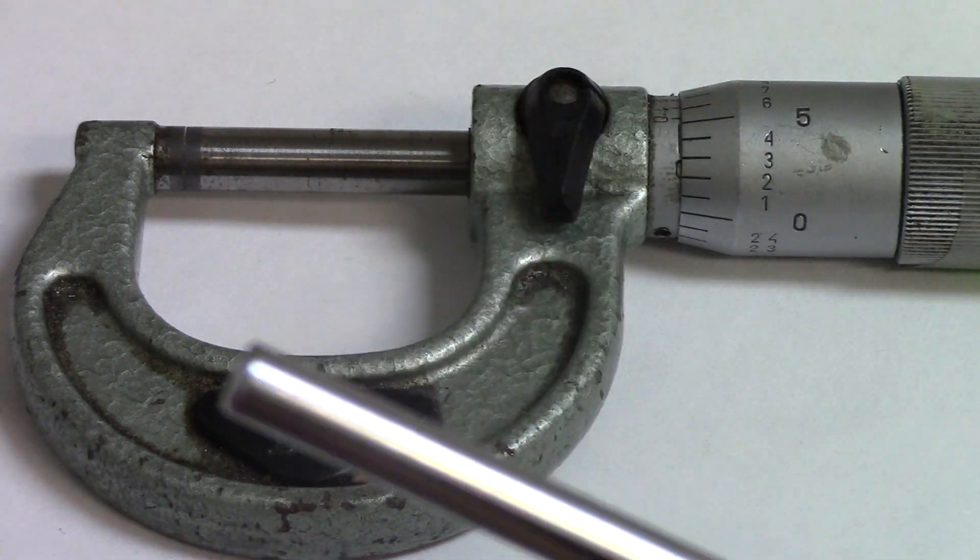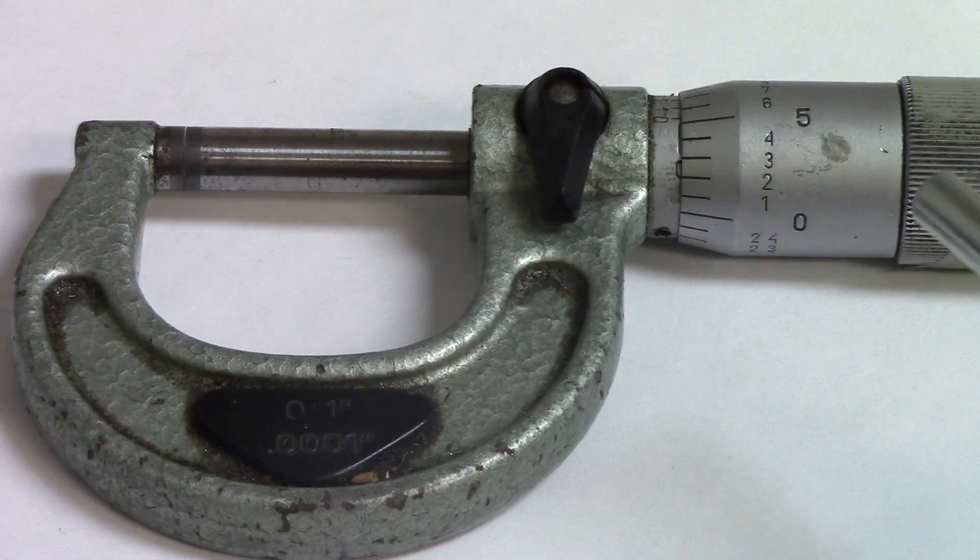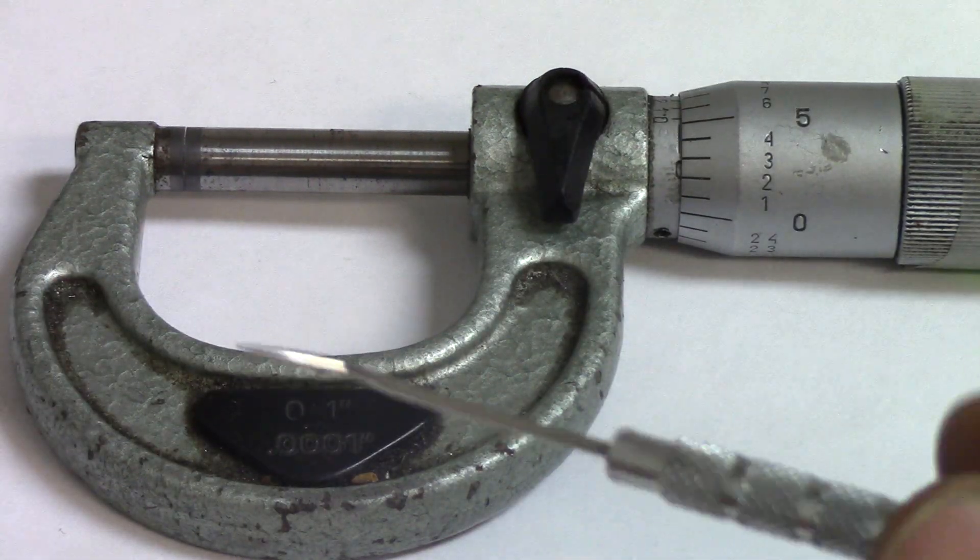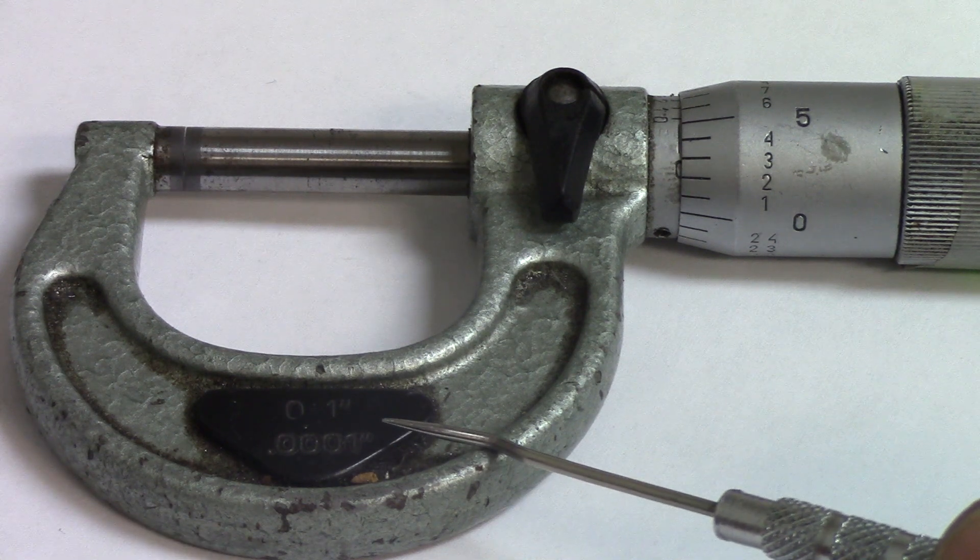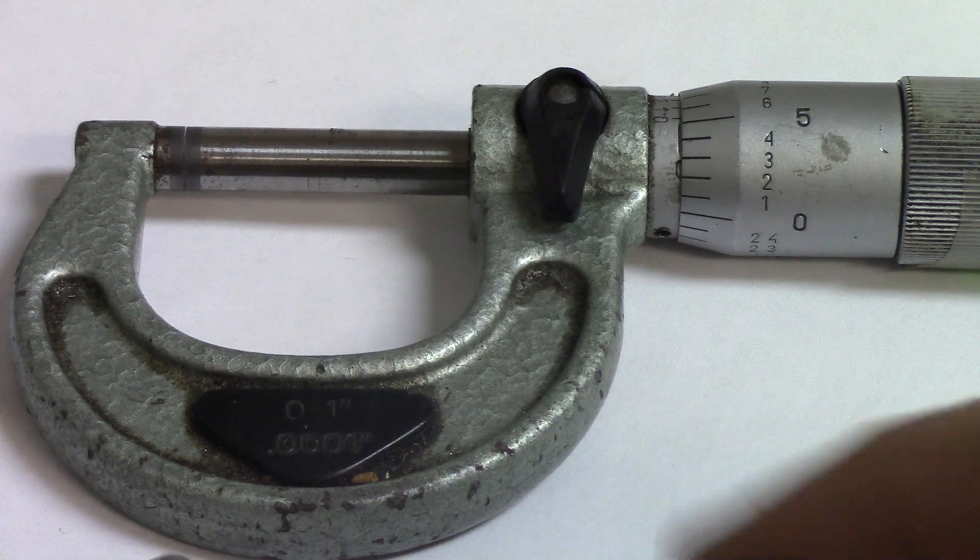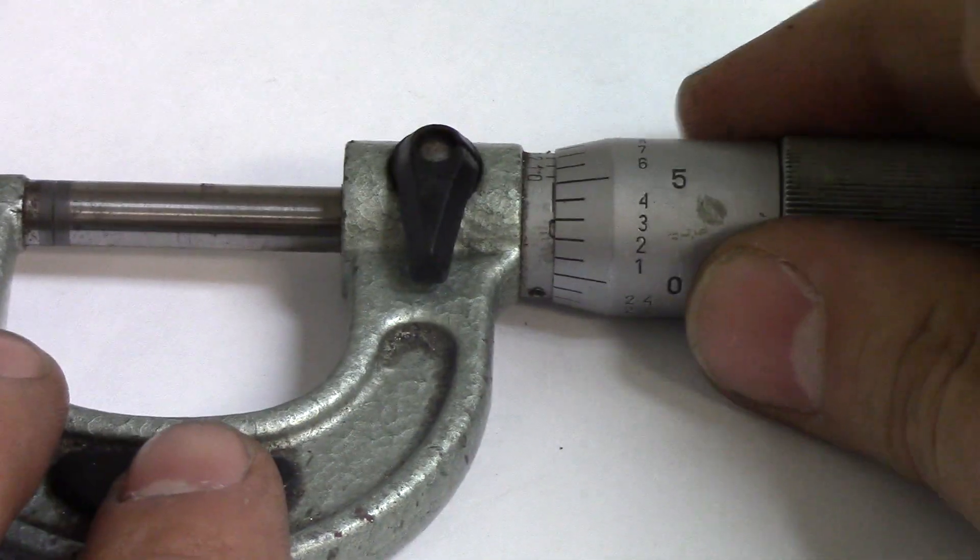With calipers you don't get to measure that accurately—you get within one thou or two thou. But with micrometers, you get to measure within tenths, which is 0.0001.